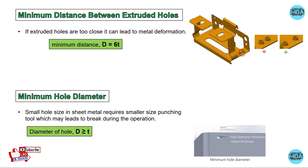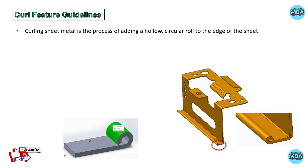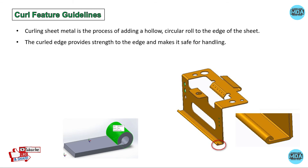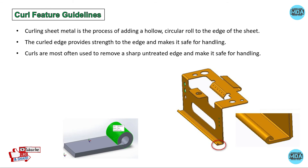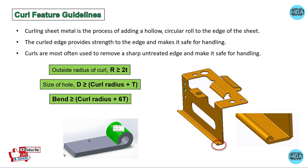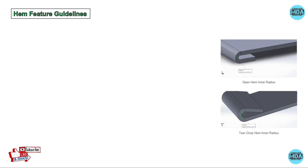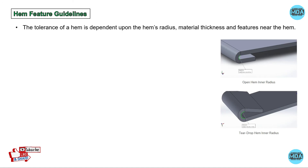For curl feature guidelines — the curl feature is added to the edge of the sheet to provide strength, and is mostly used to remove sharp and untreated edges. The outside radius of the curl should be greater than or equal to two times the thickness. The size of the hole should be greater than or equal to curl radius plus thickness, and the bend should be greater than or equal to curl radius plus six times thickness.